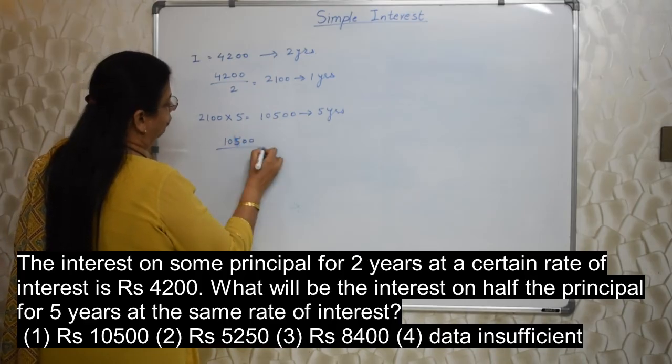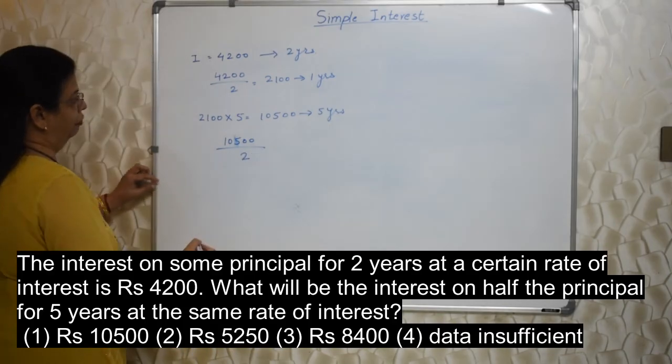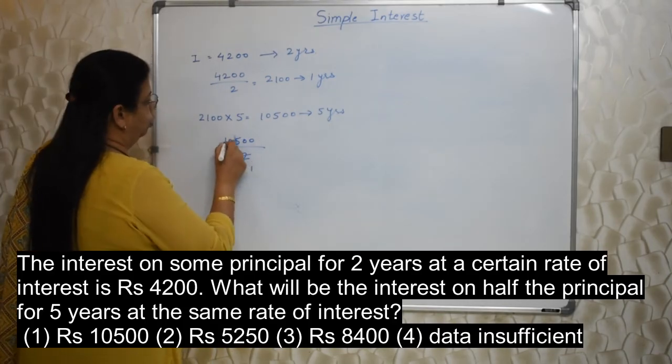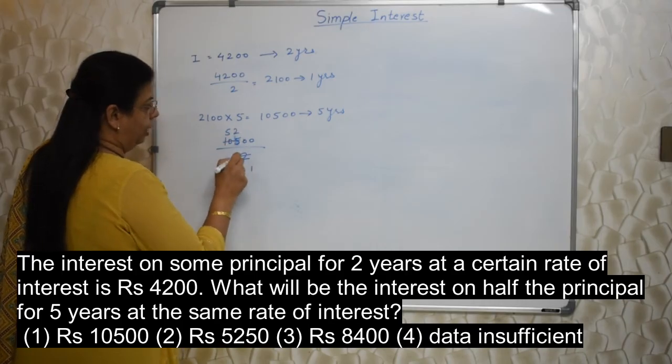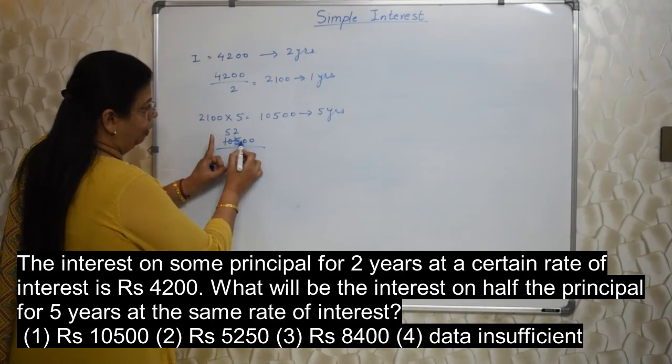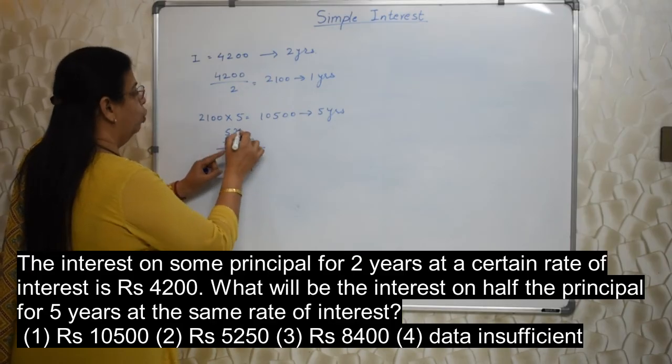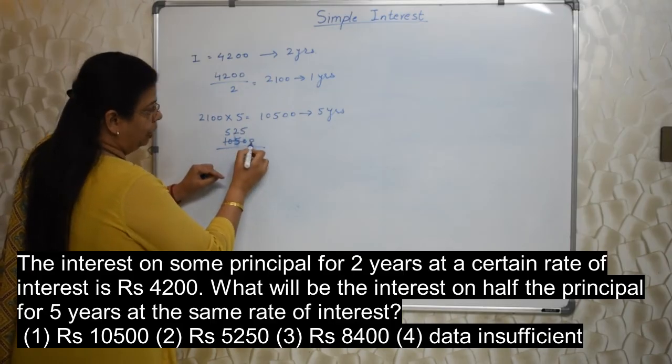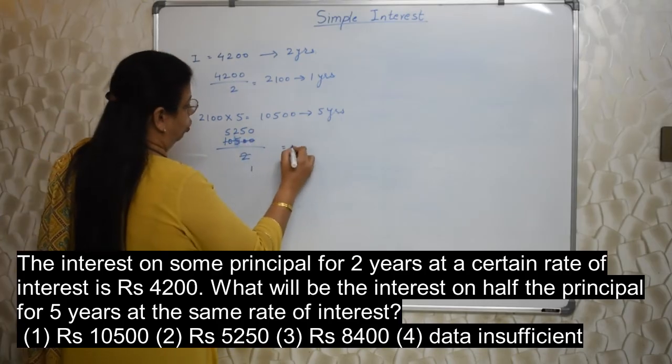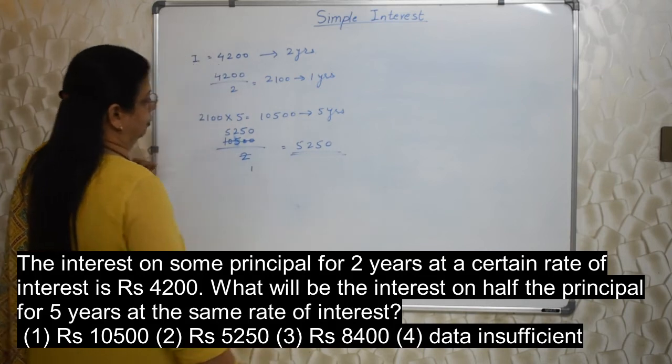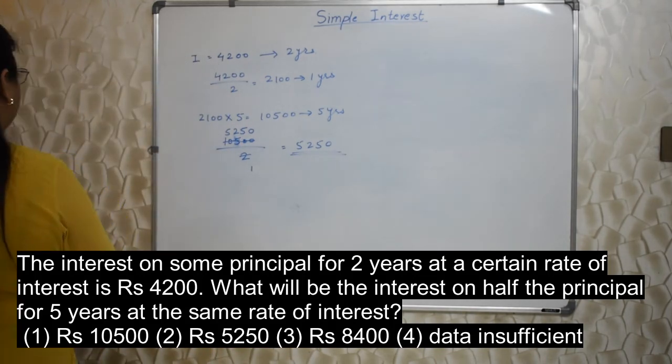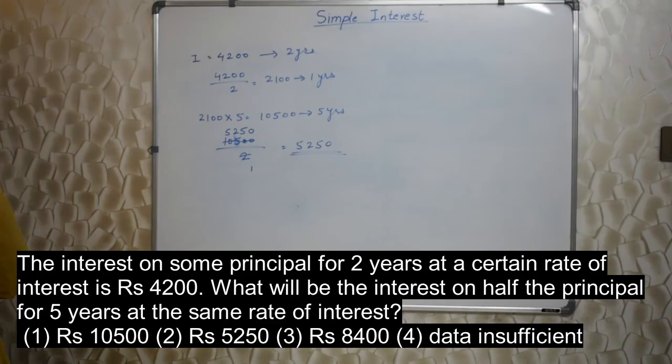So 10,500 divided by 2 we need to do half. So 2 1's are 2, 2 5's are 10. Then 2 2's are 4, 5 minus 4 is 1, 8 remaining. That 1 and 0 will make 10. Then 2 5's are 10. And please don't forget this 0. So 5,250 is the final answer. Because they are making principal half, so we need to make interest also half to arrive at the correct answer.